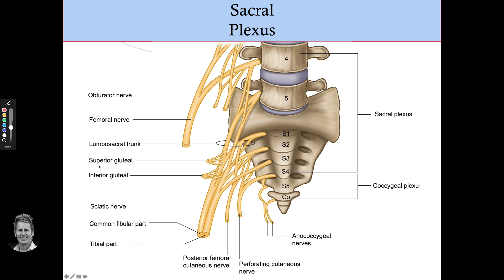The superior gluteal nerve comes from L4, L5, and S1 — these three nerves form the superior gluteal and supply the gluteus medius, the minimus, and the tensor fasciae latae. The inferior gluteal is only for the gluteus maximus, with branches from L5, S1, and a bit of S2.